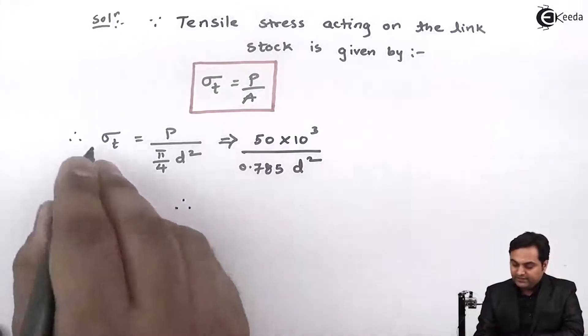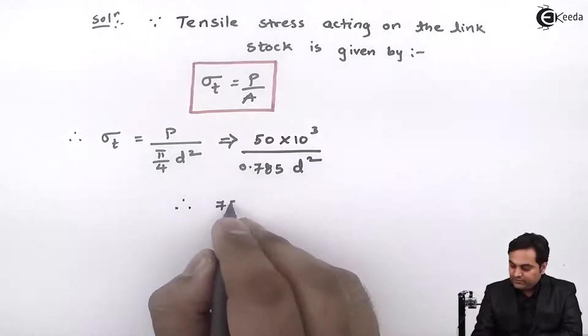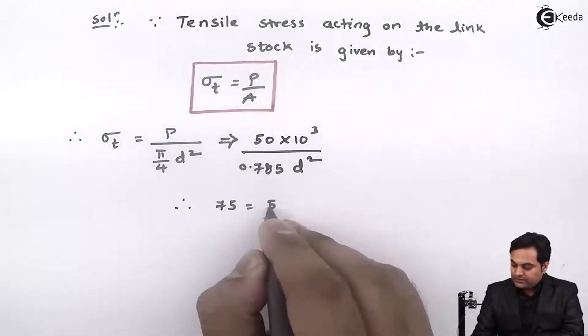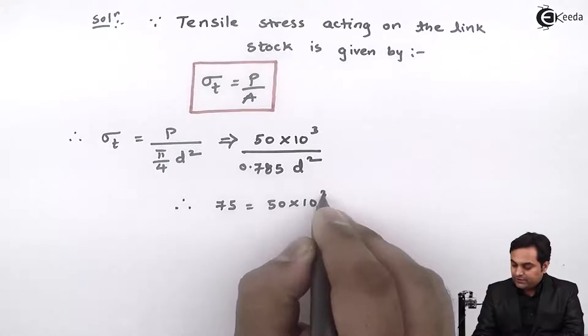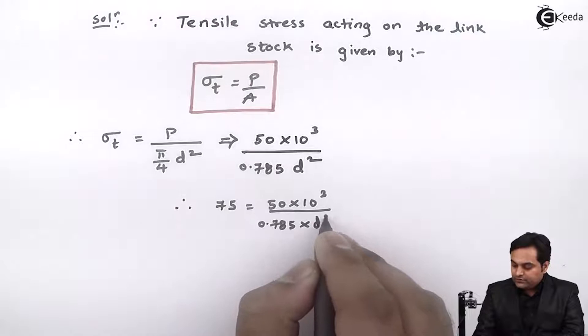And here I have tensile stress which is 75 newton per mm square, so this is equal to 50 into 10 raised to 3 upon 0.785 d square.